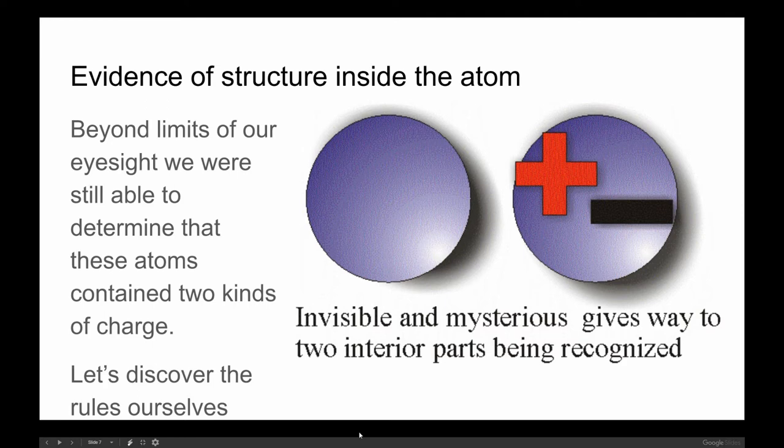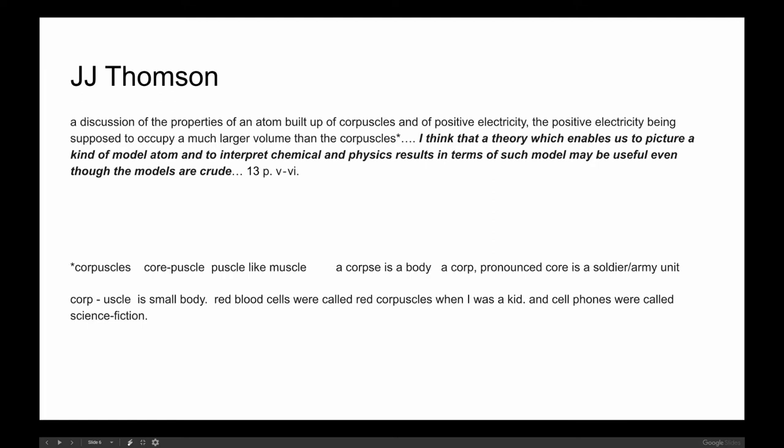Two theories formed for the possible structure of the atom. J.J. Thompson was one of the first to propose a modern theory of the atom based on the positive and negative charges that had been discovered. And he called the atom a corpuscle. This term corpuscle means body. You have a corpse. And it's buried into a lot of other words in English. When I was a kid, red blood cells were called red corpuscles. And cell phones were still called science fiction. Now we just call them red blood cells. What I find interesting in Thompson's work is this statement. I think that a theory which enables us to picture a kind of model atom and to interpret chemical and physics results in terms of such a model may be useful even though the models are crude.